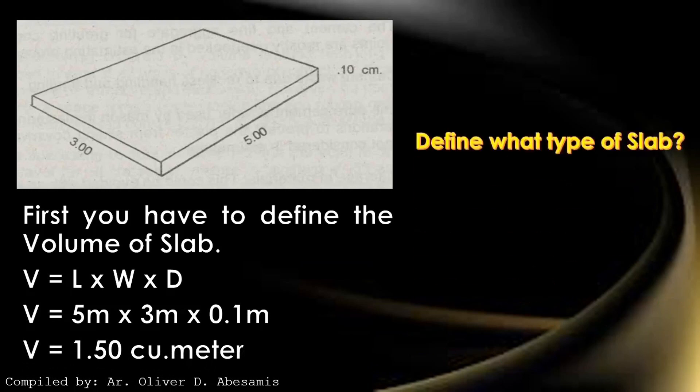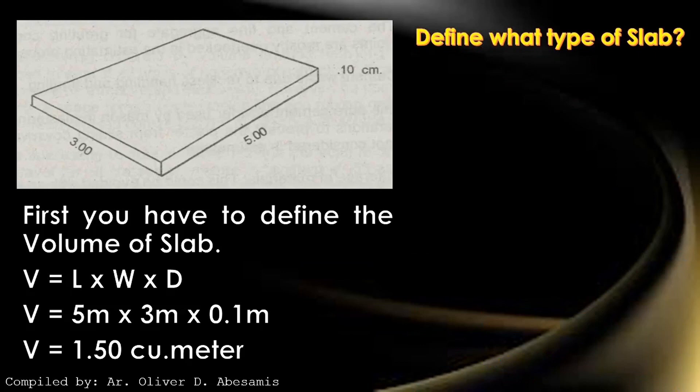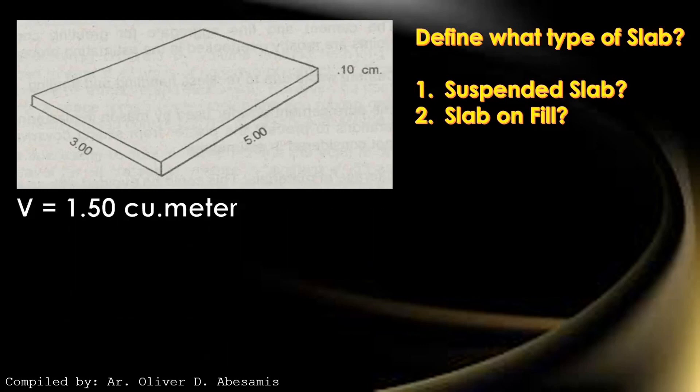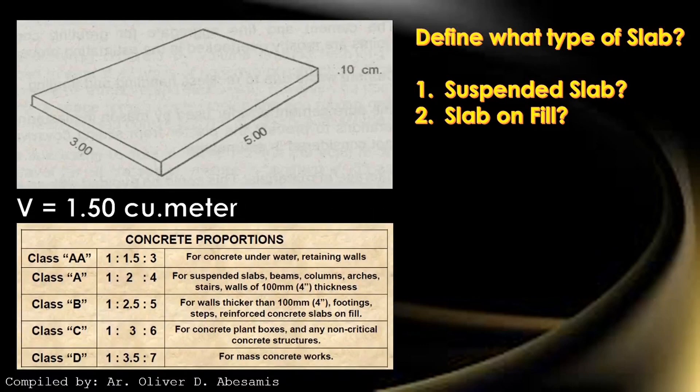Next, we have to define what type of slab we have. Suspended slab or slab on fill. Suspended slabs are not in direct contact with the ground, while slab on fill or slab on grade are in direct contact with the ground. It's very important to define the type of slab because this will determine the concrete proportion. Concrete proportion is the mixture of concrete.